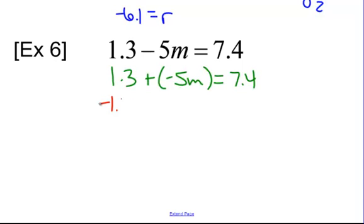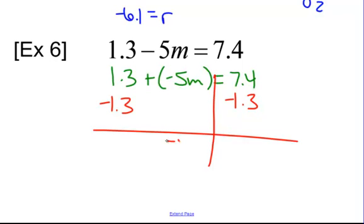And here, we just have a straight up subtraction. We're still left with negative 5m here. Not positive 5m because it's minus 5m. So it's negative. And here, we have subtraction. So that's 1. So 6.1. So negative 5m equals 6.1.